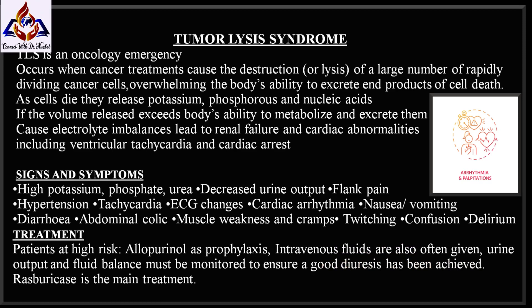Patients at high risk of developing TLS are often prescribed allopurinol as prophylaxis before commencing chemotherapy. Intravenous fluids are also given to optimize urinary output before, during, and after chemotherapy. The patient's urine output and fluid balance must be monitored carefully. Rasburicase is the main treatment — it is an enzyme injection used to treat high levels of uric acid that build up in the blood as tumors break down during chemotherapy.